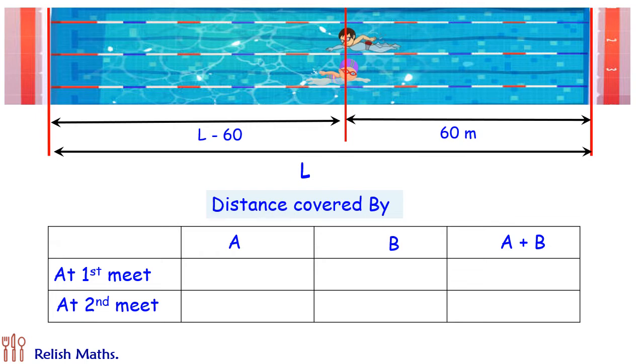The distance covered by A, B, and A and B together. So in the same time period A has covered a distance of 60 meters, B has covered distance of L minus 60 meters, and together they covered the distance of L meters.